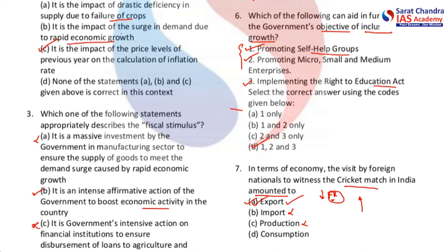Strategies include promoting services like software services exported from India, increasing foreign remittances from NRIs and expats, getting loans, attracting FDIs and FIIs — all these things will boost our forex so the current account deficit can be addressed. Also, promoting exports will address the current account deficit to a great extent.